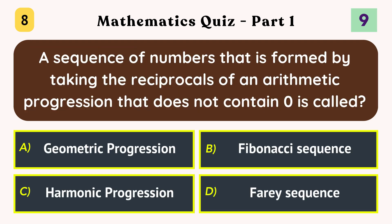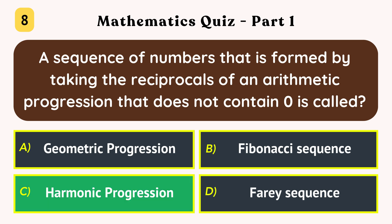A sequence of numbers that is formed by taking the reciprocals of an arithmetic progression that does not contain zero is called? Harmonic progression.